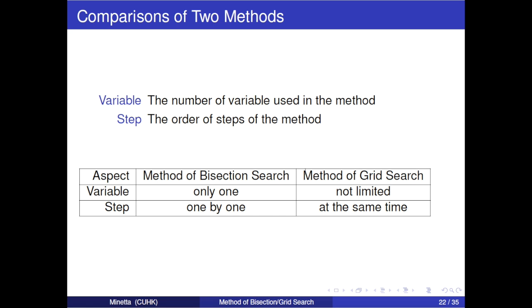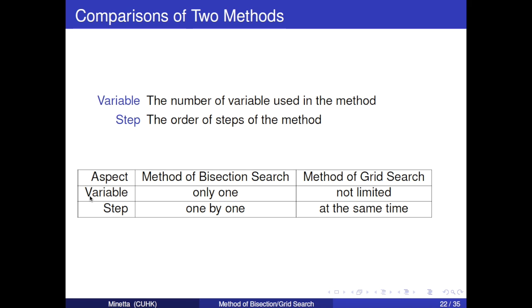Variable refers to the number of variables used in the method, and step refers to the order of steps of the method. For variable, method of bisection search only uses one variable, where method of grid search is not limited, which means that it can use more than one variable. For step, the former need to calculate one by one, where the later can calculate at the same time. Now we finish the comparisons part. We go to the application part.